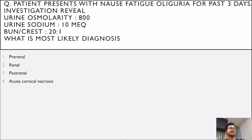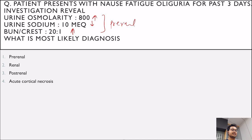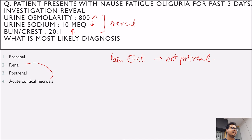Let us jump into questions. First question: patient presents with nausea, fatigue, and oliguria for past three days. Investigation reveals urine osmolarity 800, urine sodium 10, and elevated BUN to serum creatinine ratio. What is the most likely diagnosis? Urine osmolarity is increased, urine sodium is less, and BUN to serum creatinine ratio is increased — so the cause is pre-renal, and the answer is option one. Even without prior knowledge, we can exclude post-renal as there is no pain, and since acute cortical necrosis and renal causes fall in the same category, we can eliminate those options too.